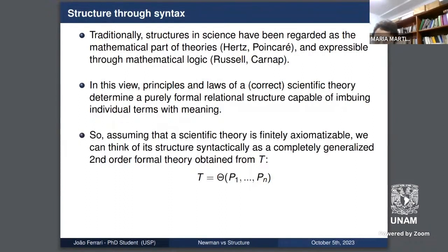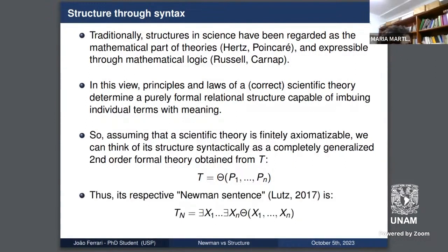Suppose we have a finitely axiomatizable scientific theory expressed syntactically. This formal theory T is in a second-order language — second-order because we want to quantify over relations. Each Pn stands for a set of n-place predicates, so it's quite general. We can also see functions under this construction. By quantifying over the predicates, we obtain the respective Newman sentence: a purely formal claim whose extension of predicates supposedly secures the reference of first-order terms. This, in principle, would capture the theory's structure — the objective knowledge encompassed by it.